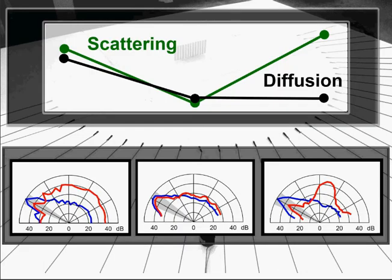Now let's compare some polar responses and the resulting scattering and diffusion. The red responses are shown for some sample at some frequency, with the blue response showing a flat reflector of the same size at that same frequency.